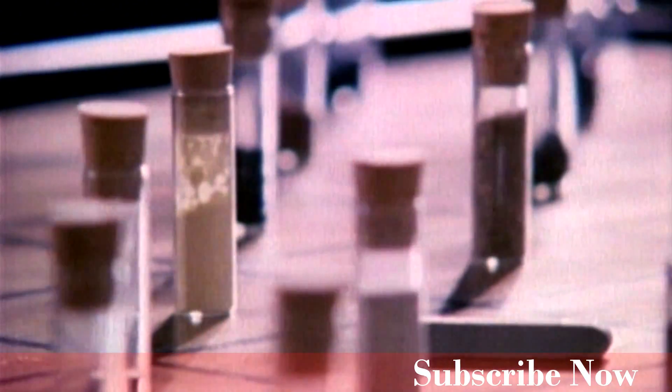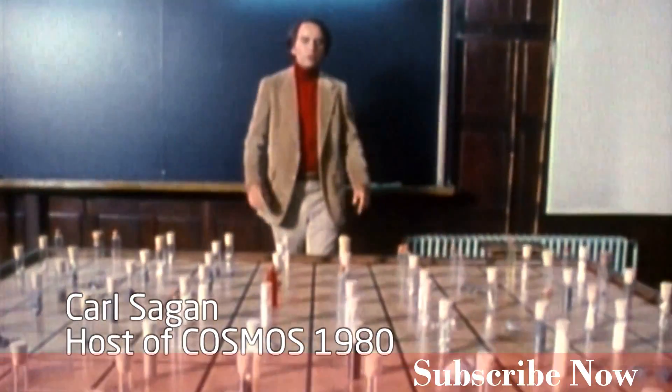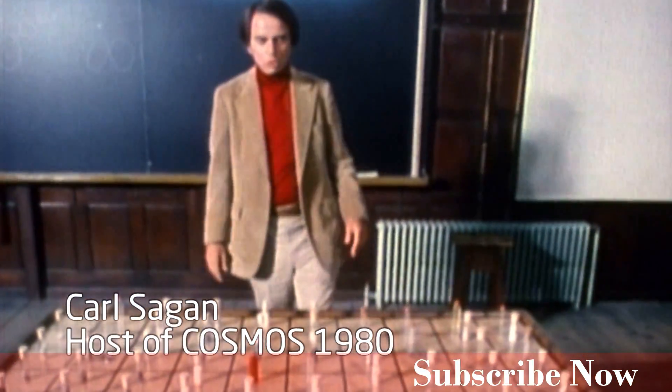There are some 92 chemically distinct kinds of atoms naturally found on Earth. They're called the elements. Here we've represented all 92 of them.